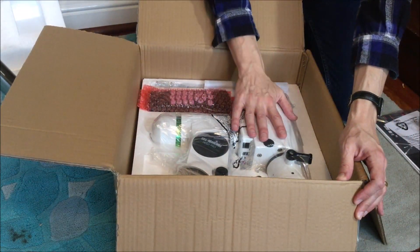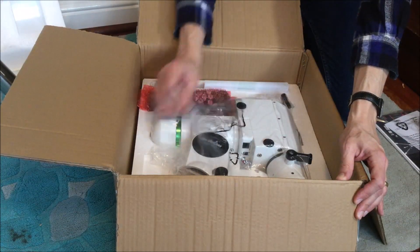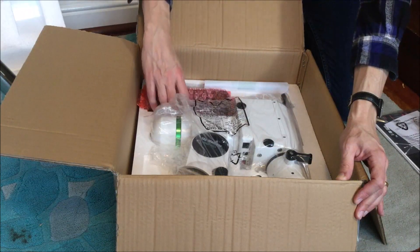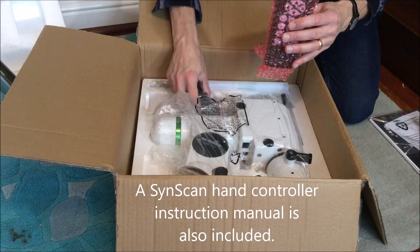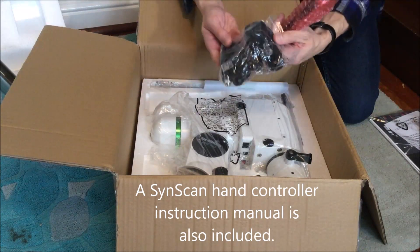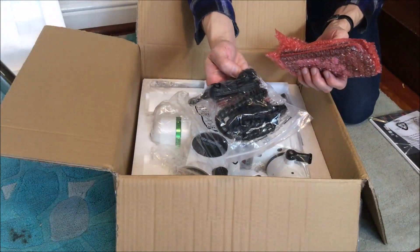So inside we've got the mount head itself all wrapped up in a plastic bag. We've got the remote control, the handset, and we've got some cables. I can see there's going to be cables for power and also to connect the handset.